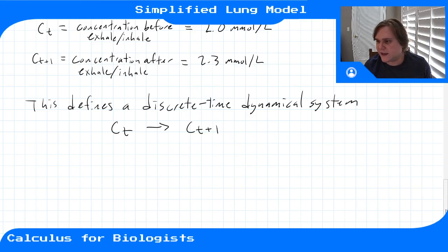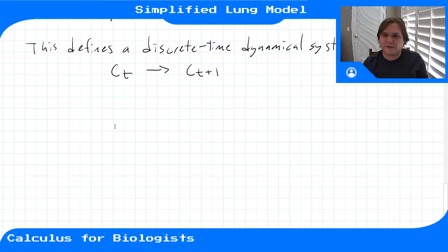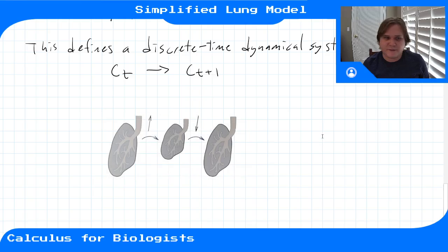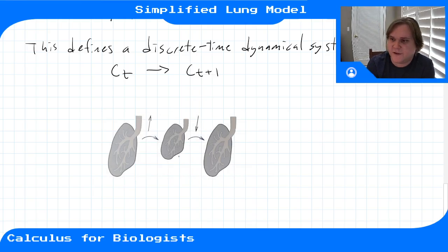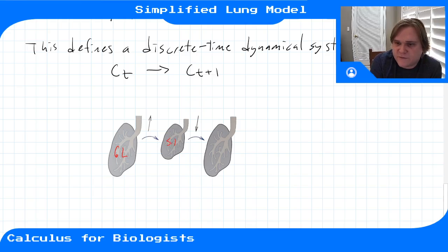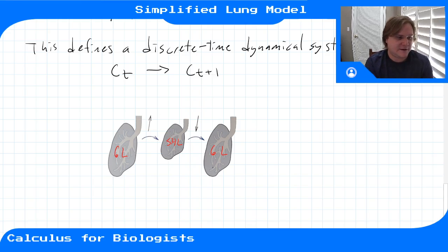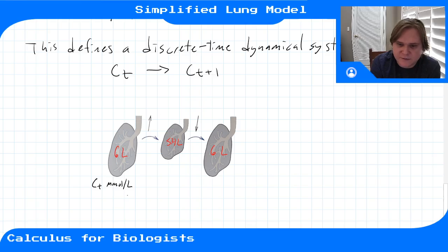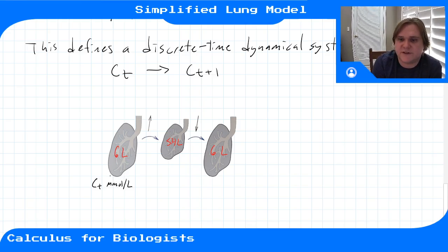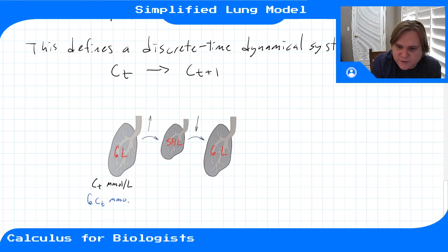Let's visualize this more carefully. Our volume went from 6 liters at step 1, down to 5.4 between steps 2 and 3, then back up to 6 liters at step 4. We start with C(t) millimoles per liter as our initial concentration, so our initial number of molecules is concentration times volume — that's 6·C(t) millimoles. The concentration is shown in black and the number of molecules in blue.